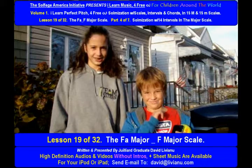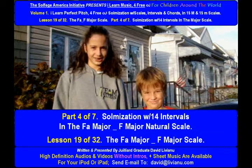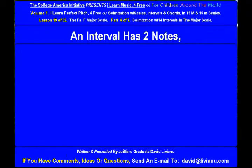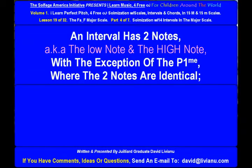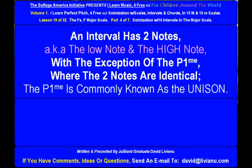Lesson 19 of 32: the F major scale, part four of seven. In the F major natural scale, there are 14 intervals. An interval has two notes, also known as the low note and the high note, with the exception of the perfect prime, where the two notes are identical. The perfect prime is commonly known as the unison.